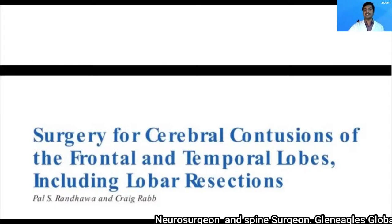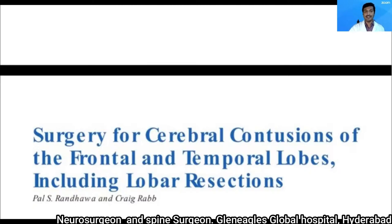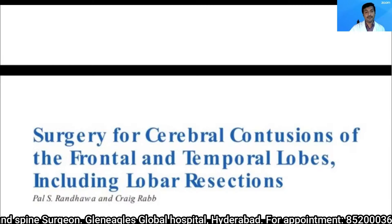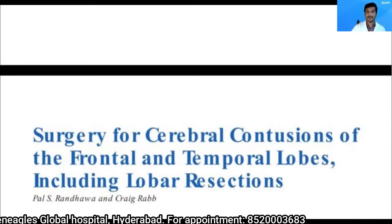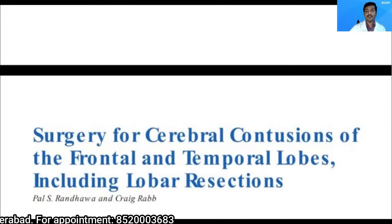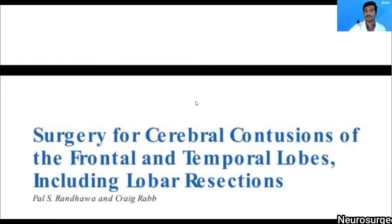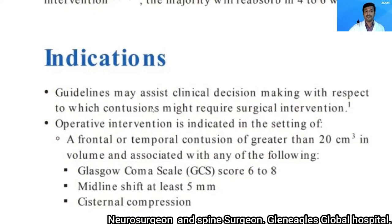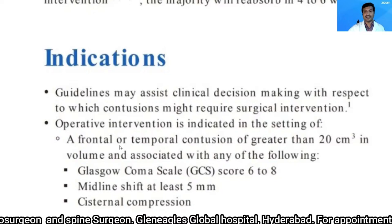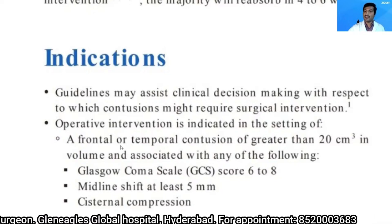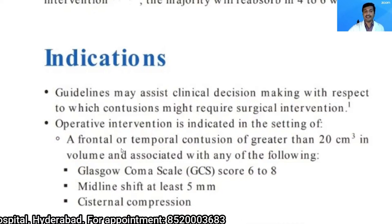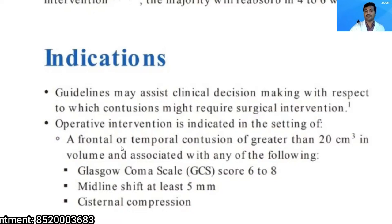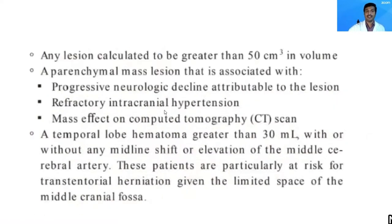This session covers surgery for cerebral contusions of the medial frontal lobe; the lateral frontal and temporal lobes including temporal lobe resection were discussed in our previous session. Here we'll be discussing medial frontal lobe and frontal lobe resection if required. The indications: a frontal or temporal contusion greater than 20 cc in volume associated with a Glasgow Coma Scale less than 8, a midline shift of at least 5 mm, cisternal compression seen on CT scan, or any frontal lesion greater than 50 cc in volume.